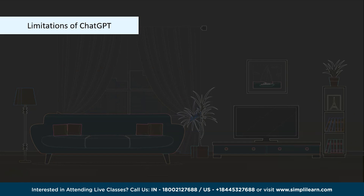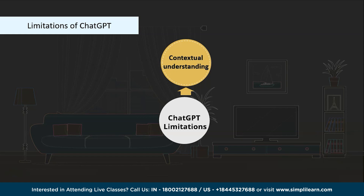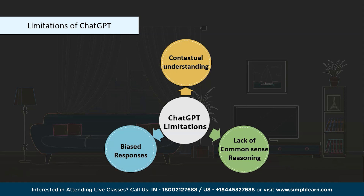Now let's understand some limitations of ChatGPT. First, contextual understanding — ChatGPT may struggle to understand the context of a conversation, leading to responses that are sometimes irrelevant or nonsensical, and may not accurately interpret nuanced or complex queries. Second, lack of common sense reasoning — it does not possess inherent common sense knowledge, which can result in responses that are technically correct but lack real-world applicability. Third, biased responses — ChatGPT can inadvertently reflect biases present in its training data, potentially generating responses that perpetuate those biases.